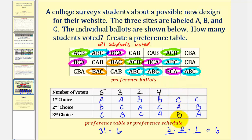And now we'll look for C, A, B — there's one, two, three, and four, which leaves three for C, B, A.